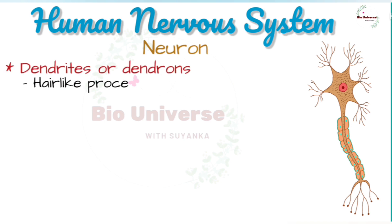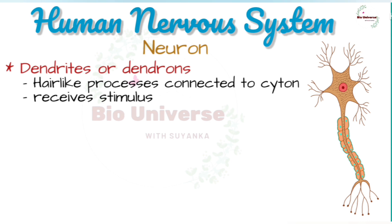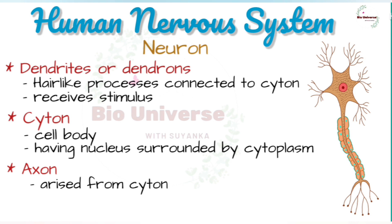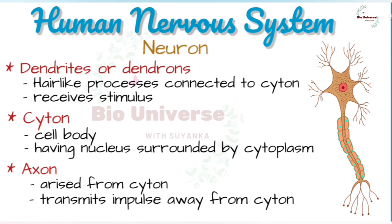Dendrites or dendrons are hair-like processes connected to the cytone. They receive stimuli, which may be physical, chemical, mechanical, or electrical, and pass it on to the cytone. The cytone is the cell body with a central nucleus surrounded by cytoplasm. From one side of the cytone arises a cylindrical process filled with cytoplasm called the axon. It is the longest part of the neuron and transmits impulses away from the cytone.